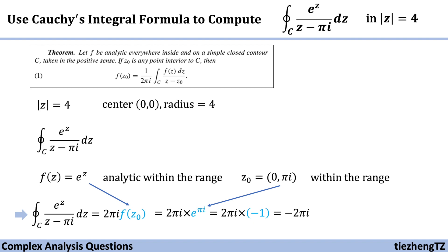You can refer to our previous video. Therefore, the final result for this given integral function is -2πi.